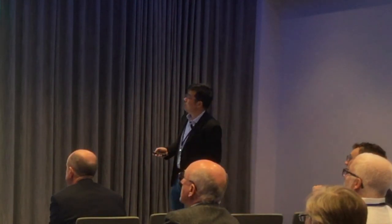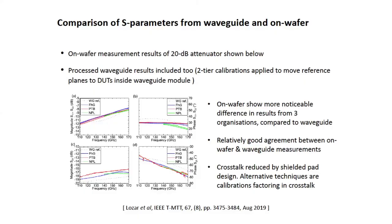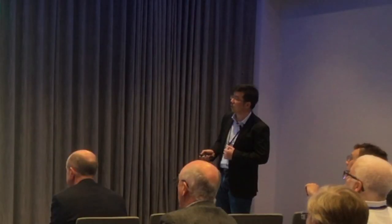We performed on-wafer measurements and compared these with waveguide measurements. As you can see, for on-wafer measurements the results from three different organizations show a noticeable difference — because, as mentioned, on-wafer measurements are more complex and more difficult at very high frequencies. However, we have relatively good agreement between the three organizations, and relatively good agreement between the on-wafer and waveguide results. This makes us feel more confident about our on-wafer measurement technique — our results are reliable, as demonstrated by this joint exercise.